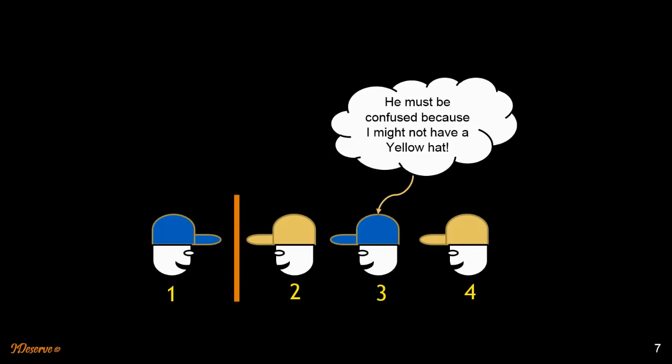He must be confused because I might not have a yellow hat. If I had a yellow hat, same as prisoner two, prisoner four would have shouted out saying that he has a blue hat, but no, he's staying quiet.